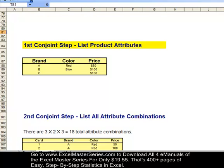The first step is a list of all the product attributes and all possible consumer choices. You have three choice of brands: brand A, B, and C, two choices of color: red and blue, and there are three choices of price: $50, $100, and $150.